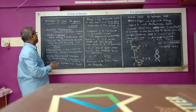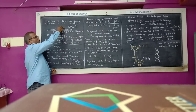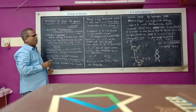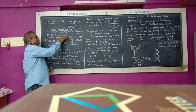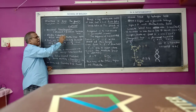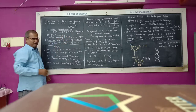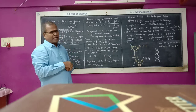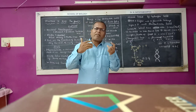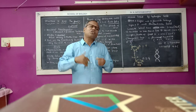To recap: bacterial transformation was proven by Griffith's experiment on Streptococcus. The blender experiment by Hershey and Martha Chase showed DNA was the transforming principle. Avery, MacLeod, and McCarthy confirmed DNA is the genetic material. DNA is a polynucleotide with two helices, first studied by X-ray crystallography by Rosalind Franklin (Wilkins and Franklin).